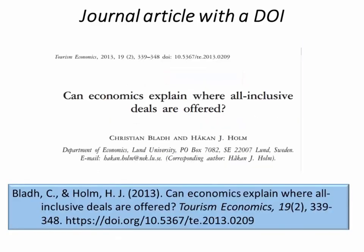This is an example of a journal article with a DOI. The author, date, and title of a reference are the same as a print journal. You have the DOI information in the publication field. The phrase 'retrieved from' is not included.